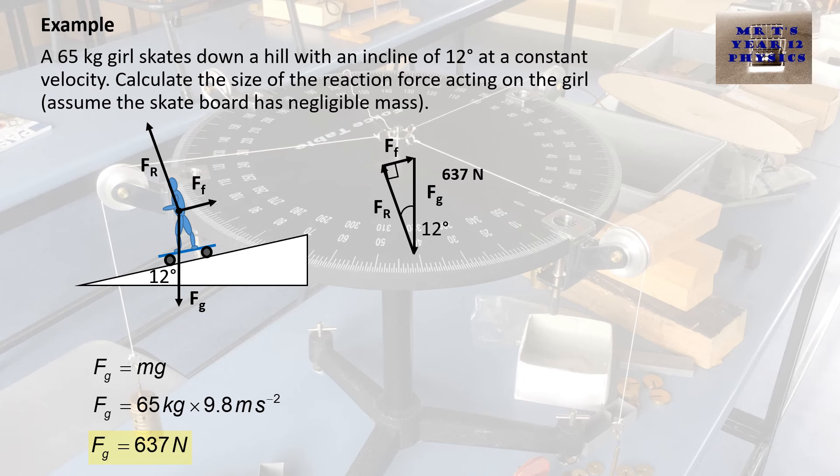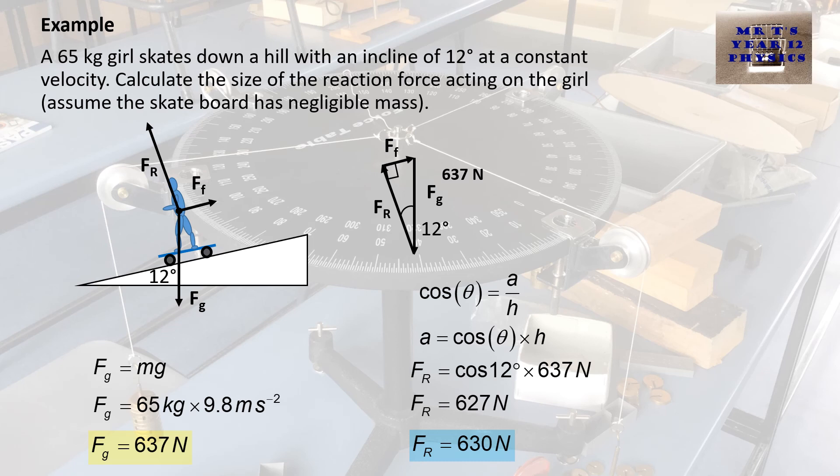So we want to find the adjacent value. Using SOHCAHTOA, we're going to use the cosine. So cosine theta equals A over H. I want to find out what the adjacent side is, the FR side. So I move the H from the denominator and multiply it to the cosine theta. So I substitute the values in. The theta is 12 degrees. The hypotenuse is 637. We carry out that calculation to get our answer, which is 627. Again, we look at our original data. The smallest number of accuracy is two significant figures. So we're going to put our answer to two significant figures, 630 newtons.